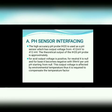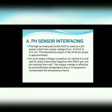Now let's see pH sensor interfacing. This sensor is used to measure the pH level of water. The high-accuracy pH probe IH-20 is used as a pH sensor, which has an output voltage from negative 412 millivolts to positive 412 millivolts.